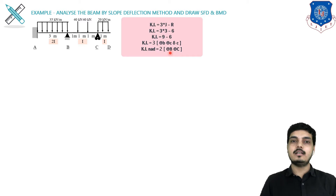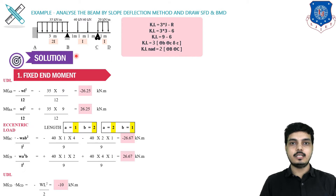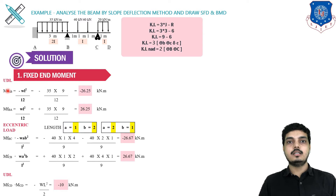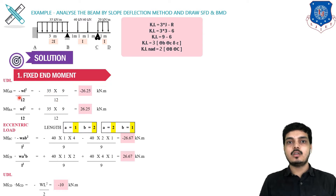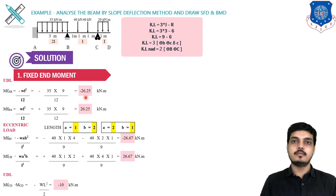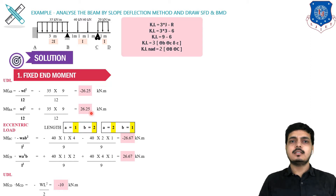Our first step is to find the Fixed End Moments (FEM). For span AB with UDL, MFAB and MFBA use the formula WL²/12. At A it will be negative and at B it will be positive. W = 35, L = 3, so L² = 9, divided by 12. Putting all values: MFAB = −26.25 kN·m and MFBA = +26.25 kN·m.